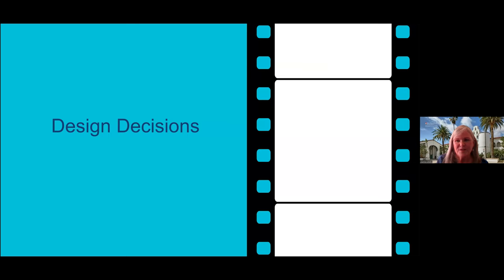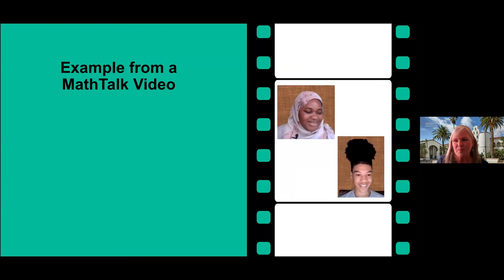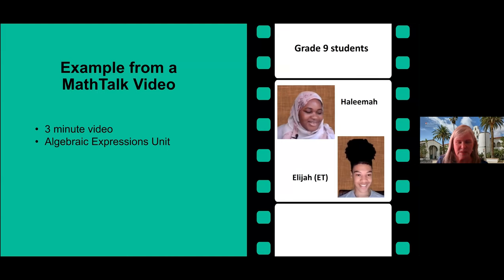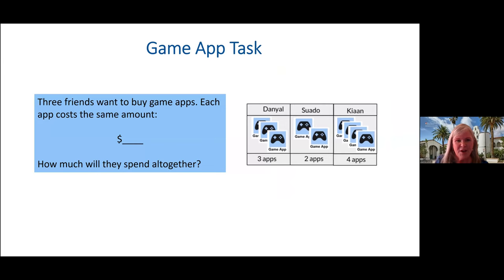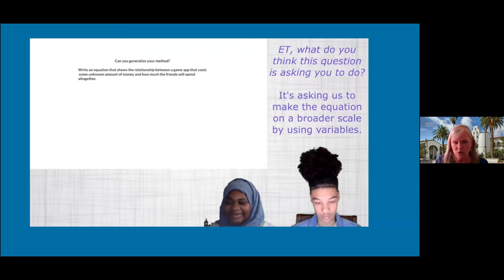I want to convey a couple of design decisions we made in developing these videos. The first, probably most important decision, was to use unscripted rather than scripted student dialogue. I'd like to share an example from our algebraic expressions unit. This features two grade nine students, Halima and Elijah — he goes by ET. They were working on a task with a game app context, considering three friends buying different numbers of apps. Halima and ET decided how much each app should cost, determined how much should be spent altogether, kept varying that amount, and eventually considered an unknown amount. That's where we'll pick up — where they generalize that reasoning and express it with algebra.